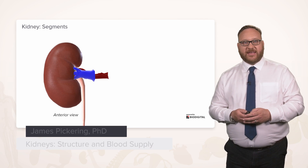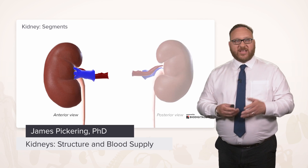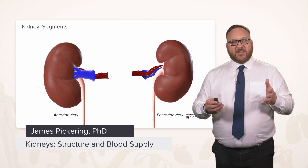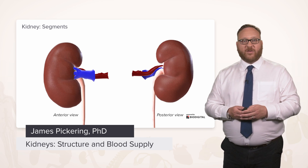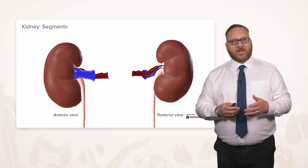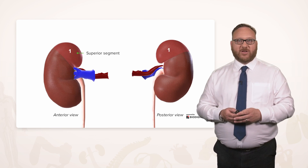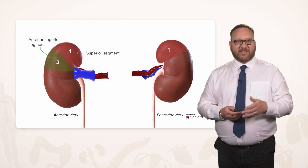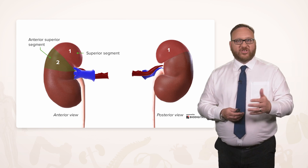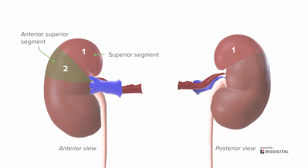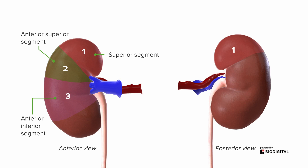Now let's specifically look at the kidneys themselves. The kidneys can be divided up into a large number of segments that help us locate various different aspects. Here we have the superior segment of the kidney, an anterior superior segment projected closer to the anterolateral abdominal wall, an anterior inferior segment, and then the inferior segment. These four different segments are important when we think about the blood supply, which we'll come to in a moment.